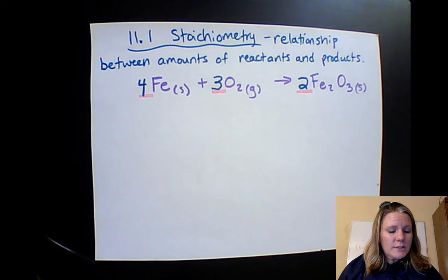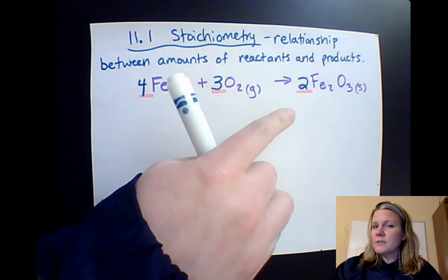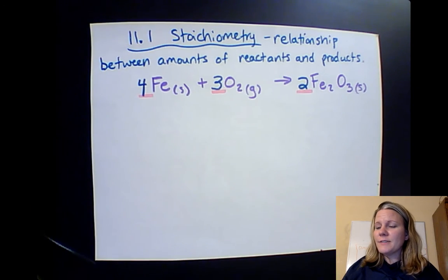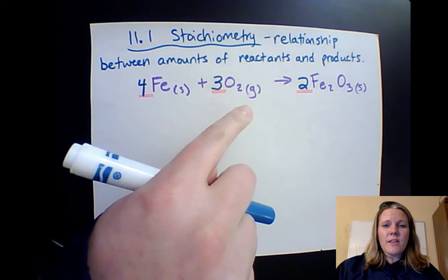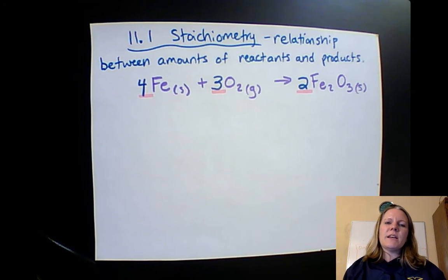But let's take a look at something that is conserved. Are there four irons on the left and four irons on the right? Yes, there are. How about oxygen? Six on the left, six on the right. Awesome. So atoms in a way are conserved. And this leads to my next point, that mass is conserved.